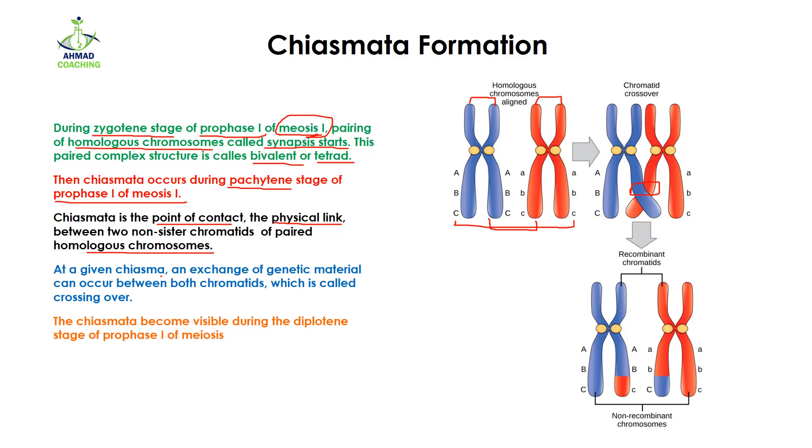At a given Chiasma, an exchange of genetic material can occur between chromatids which is called crossing over. Why is Chiasmata taking place? So that the genetic material between the non-sister chromatids can be exchanged. You can see that the red part from this goes to the blue part and the blue part goes to the red part, and after that we can see that genetic material has been exchanged between the two non-sister chromatids of homologous chromosomes.